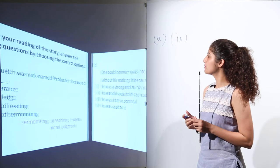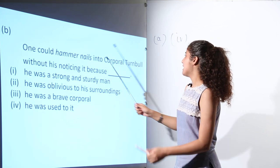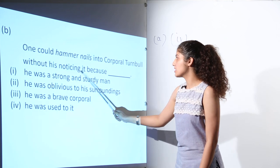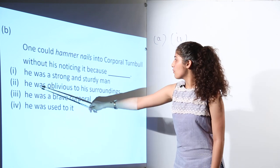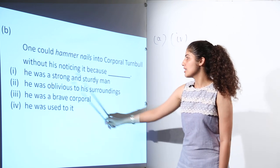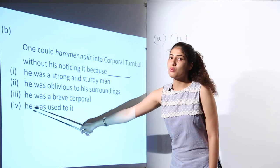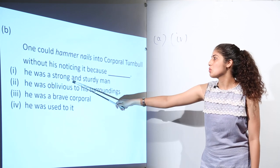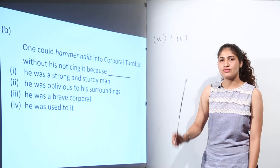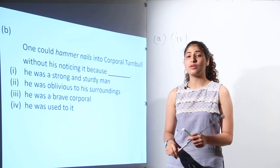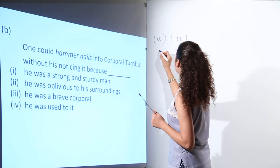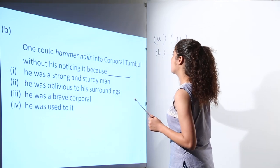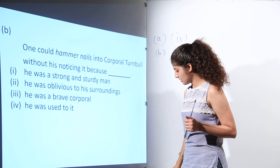Next is, one could hammer nails into corporal Turnbull without his noticing it because he was a strong and sturdy man. He was oblivious to his surroundings. He was a brave corporal. He was used to it. Because he was a strong and sturdy man. As we have discussed in the fiction that he was a tough man, he was the hero of all the soldiers. So the answer will be option number one.